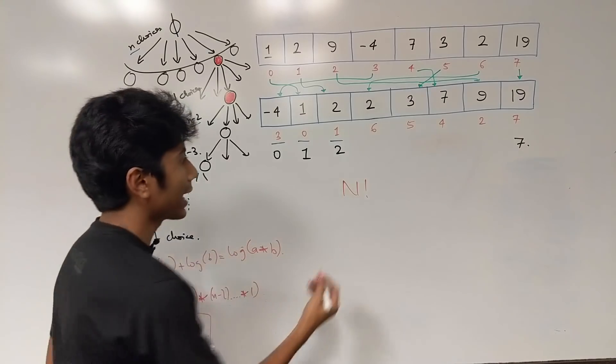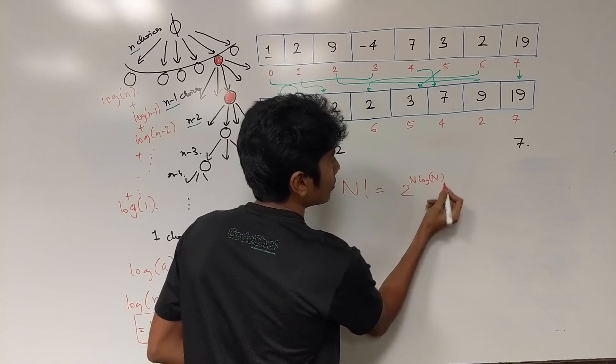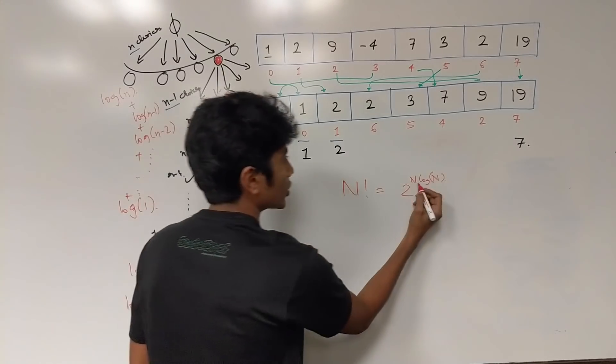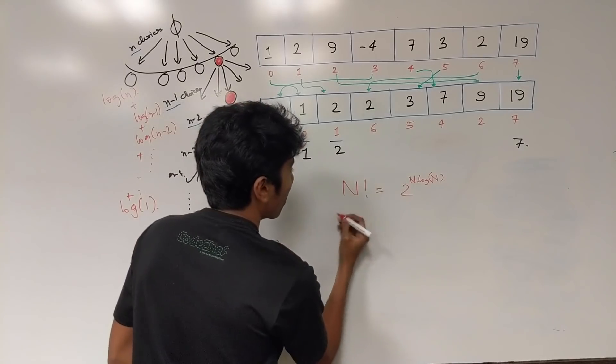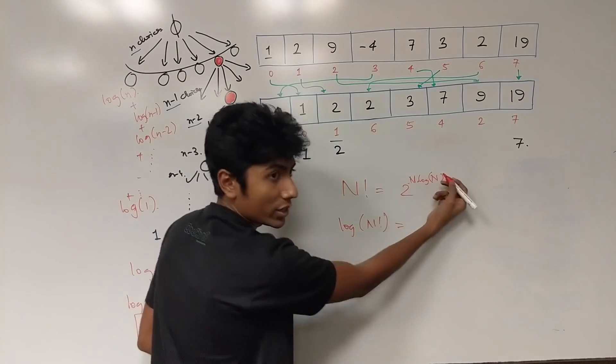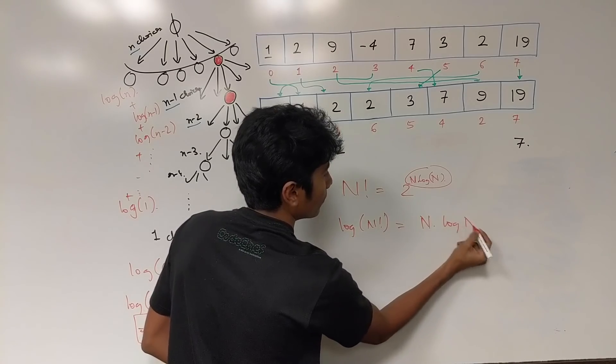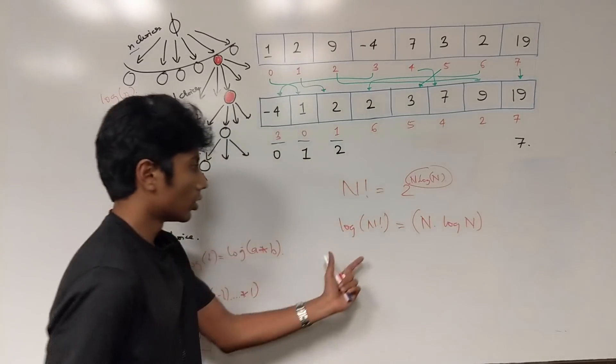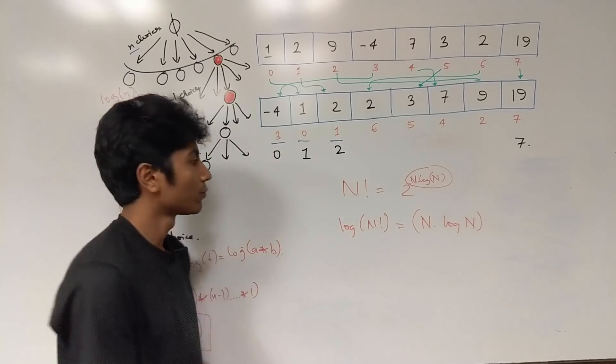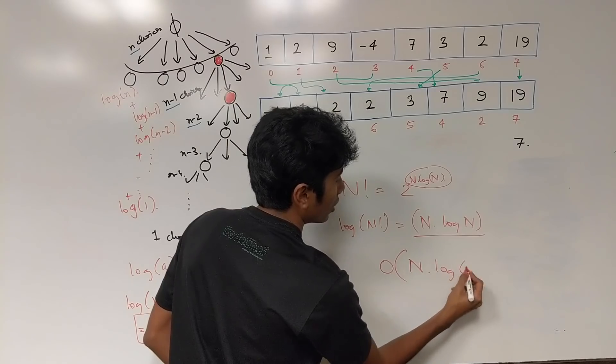Now n factorial can be approximated to 2 raised to power n log n. Okay? This is an approximation and there's a link in the description below for this approximation. It's from Wikipedia. Which gives us that if you take the log on both sides log of n factorial then log of 2 raised to power something is the number itself and that comes out to be n log n. Right? So this is the minimum required time to sort an array.